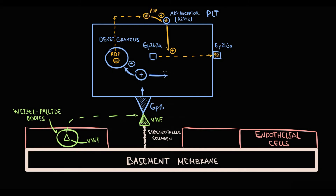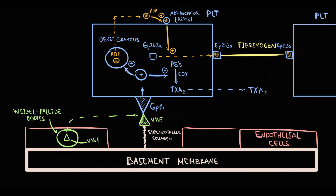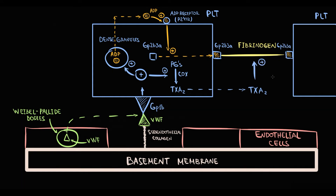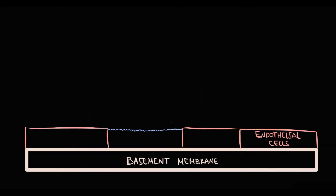In addition, platelets begin to produce Thromboxane A2 from prostaglandins. The function of Thromboxane A2 is to promote aggregation. When fibrinogen encounters a GP2B3A receptor on the platelet surface, it immediately binds to GP2B3A. When another platelet comes to the site of injury, it binds by GP2B3A to fibrinogen, a process accelerated by Thromboxane A2. This occurs repeatedly until a platelet plug is formed — this gathering is called aggregation.